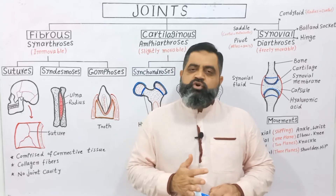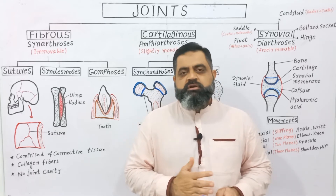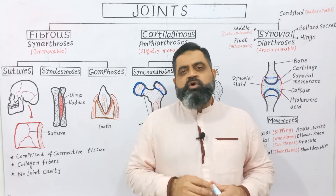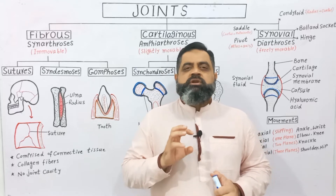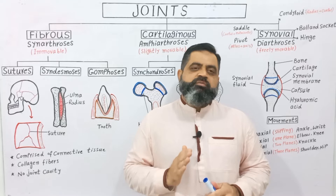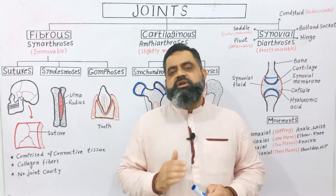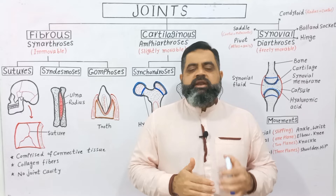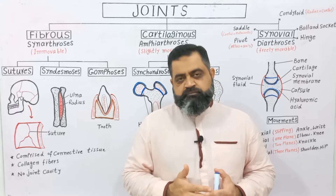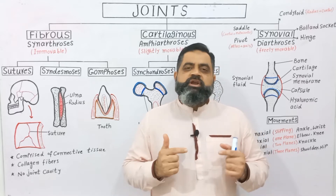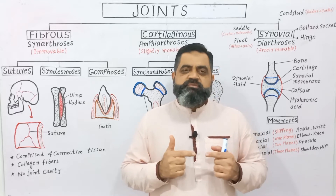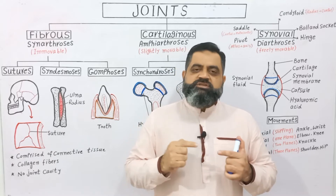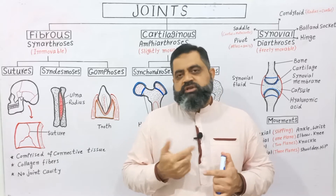Our body contains around 206 bones in an adult, while the number of joints varies from 250 to 350 depending upon the age and type of person. Where two bones meet with each other, the articulation of these bones is known as a joint.